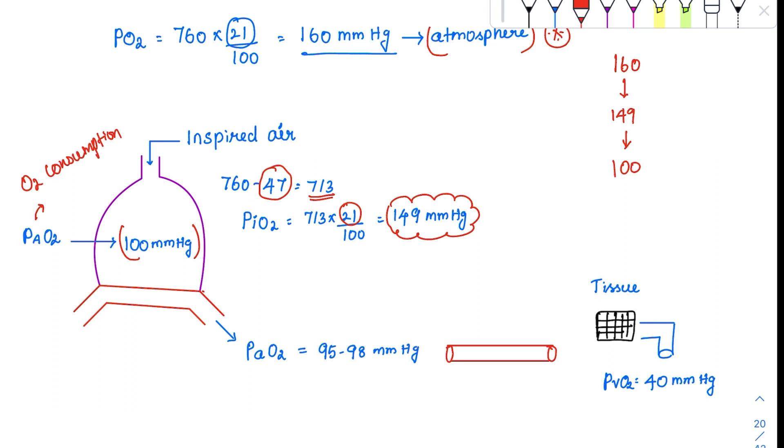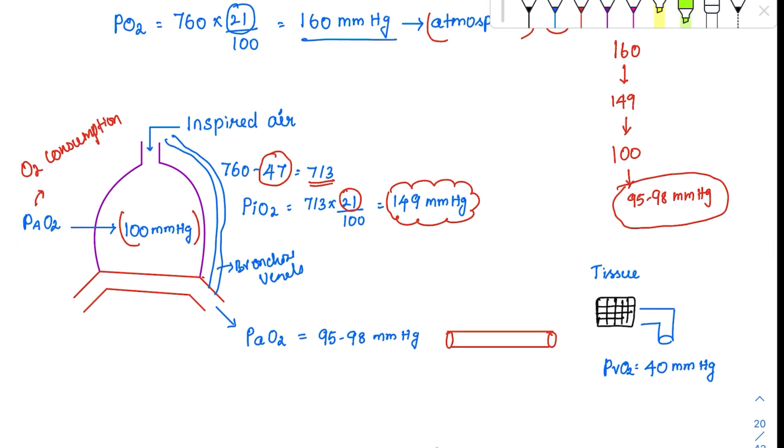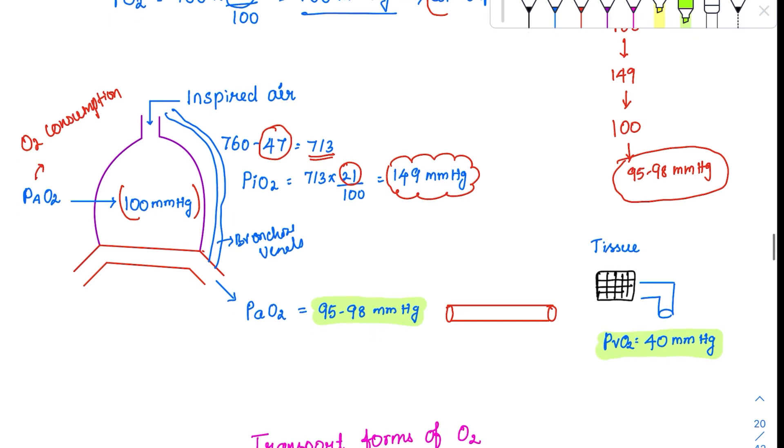Even this 100 mm is not transported in the blood. Why? Because we know there is one physiological shunt which is directly bringing the venous blood into the arterial system, that is with the help of bronchial vessels. So the partial pressure drops still more, to around 95 to 98 mm Hg. This is the one that is being transported in the arterial side. And whenever it reaches the tissue, it gives out the oxygen. And the partial pressure in the venous side drops to around 40 mm Hg.